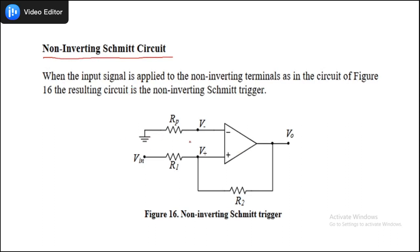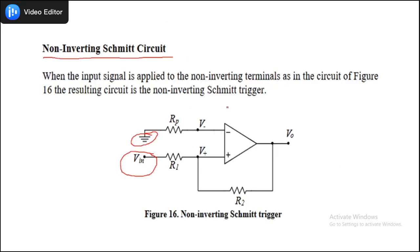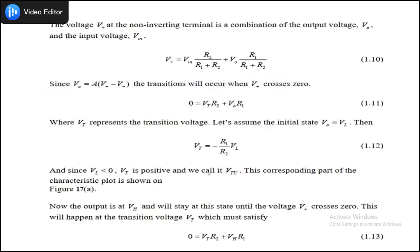Now let us discuss the non-inverting Schmitt trigger. The change from the inverting type is that Vin is now applied at the non-inverting terminal, and the remaining circuit stays the same. Please pause the video and draw this circuit on your copy so that you can derive the equations. In this circuit, the input is applied on the non-inverting terminal, so V+ becomes a function of both input voltage and output voltage.